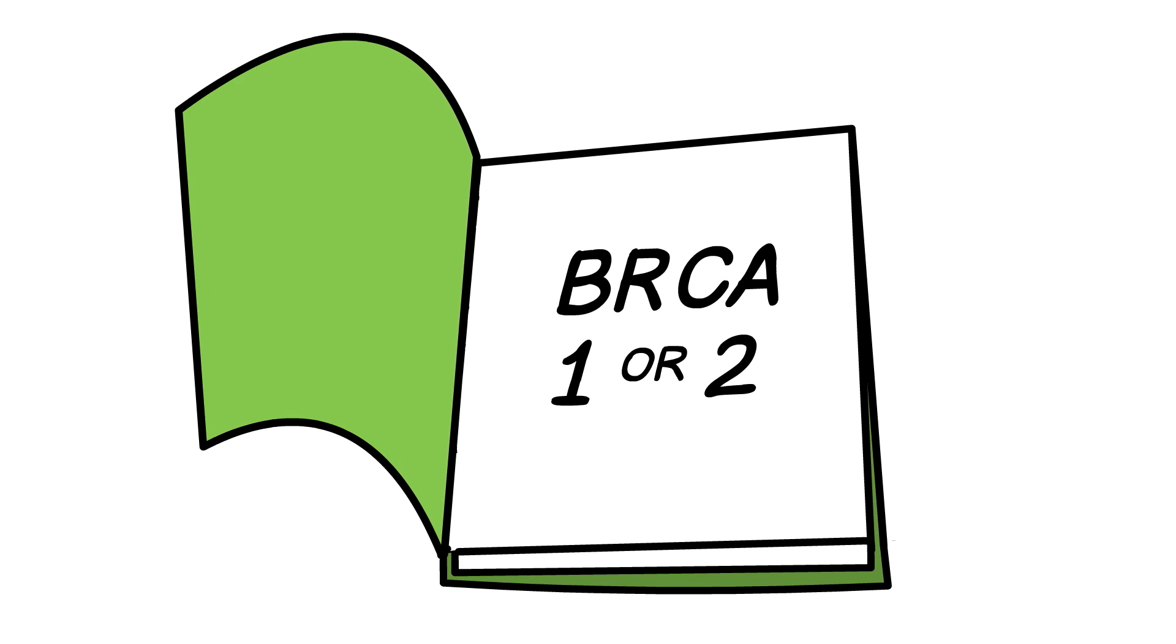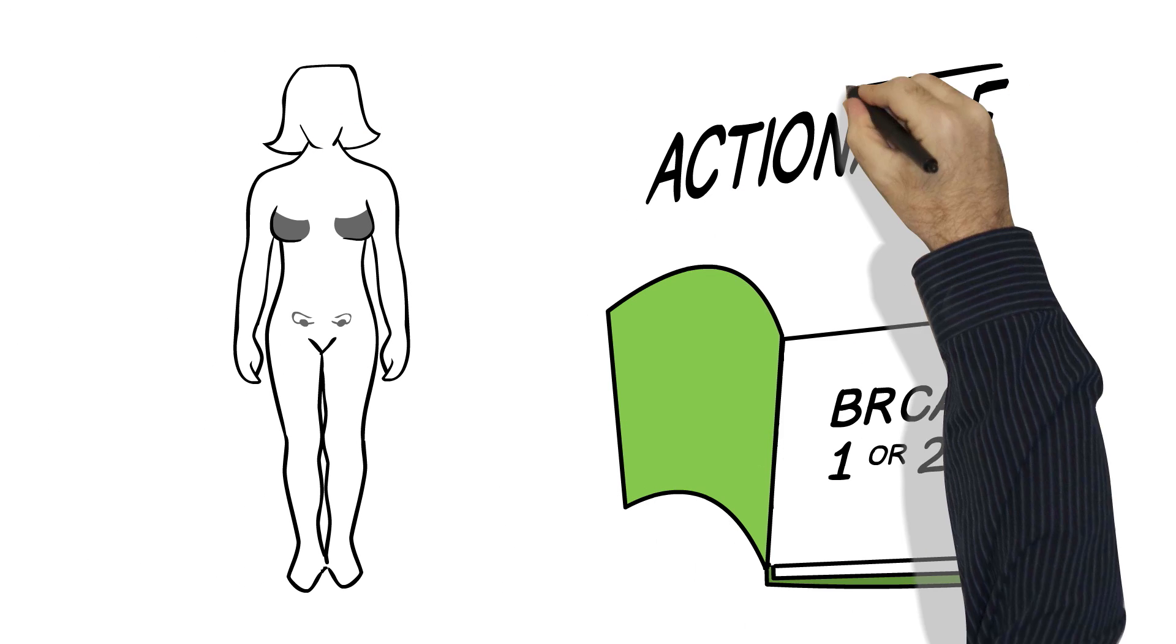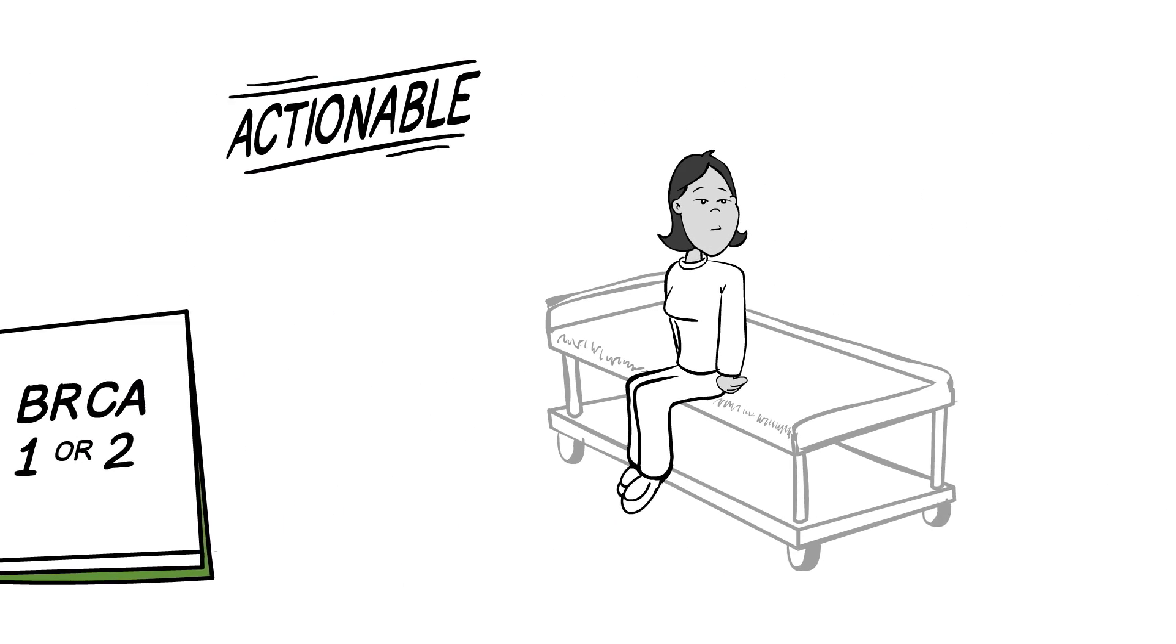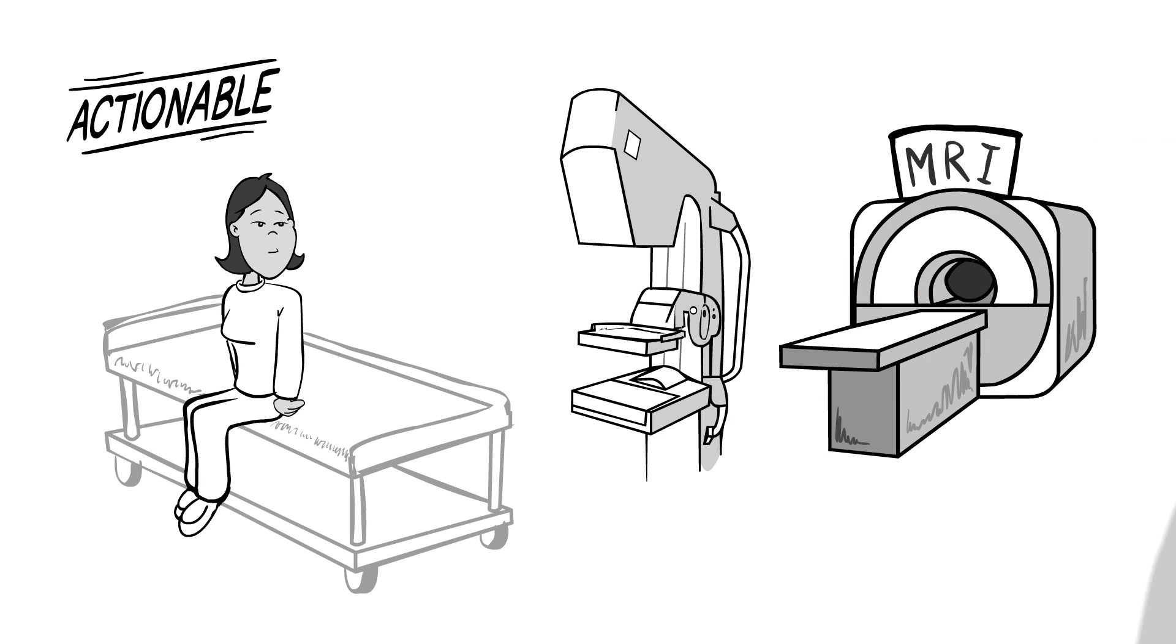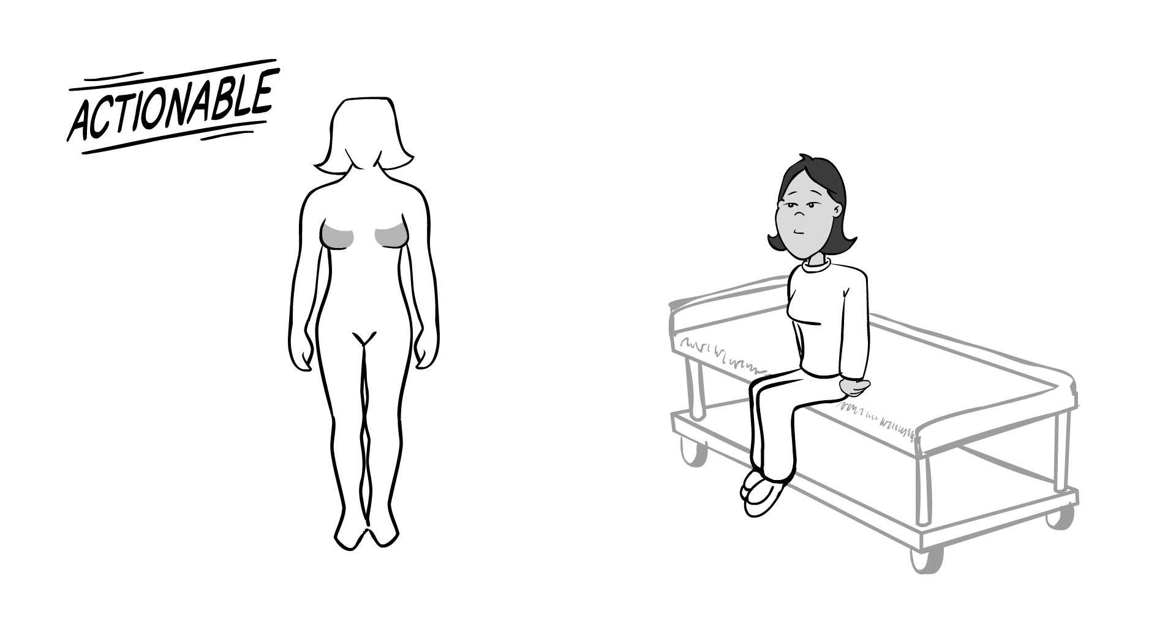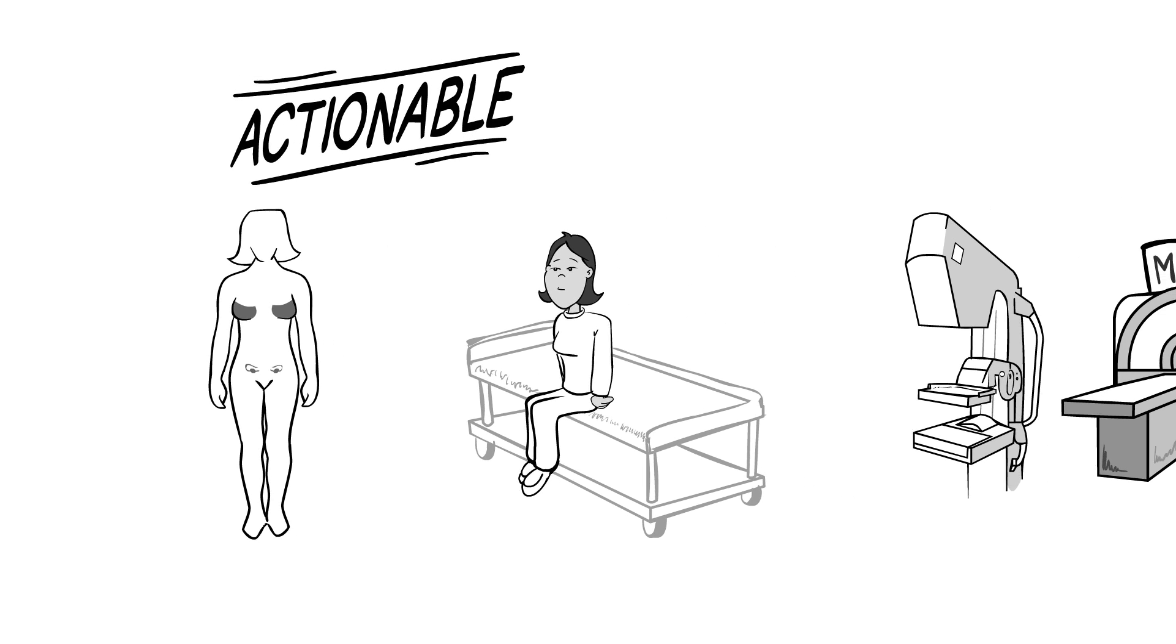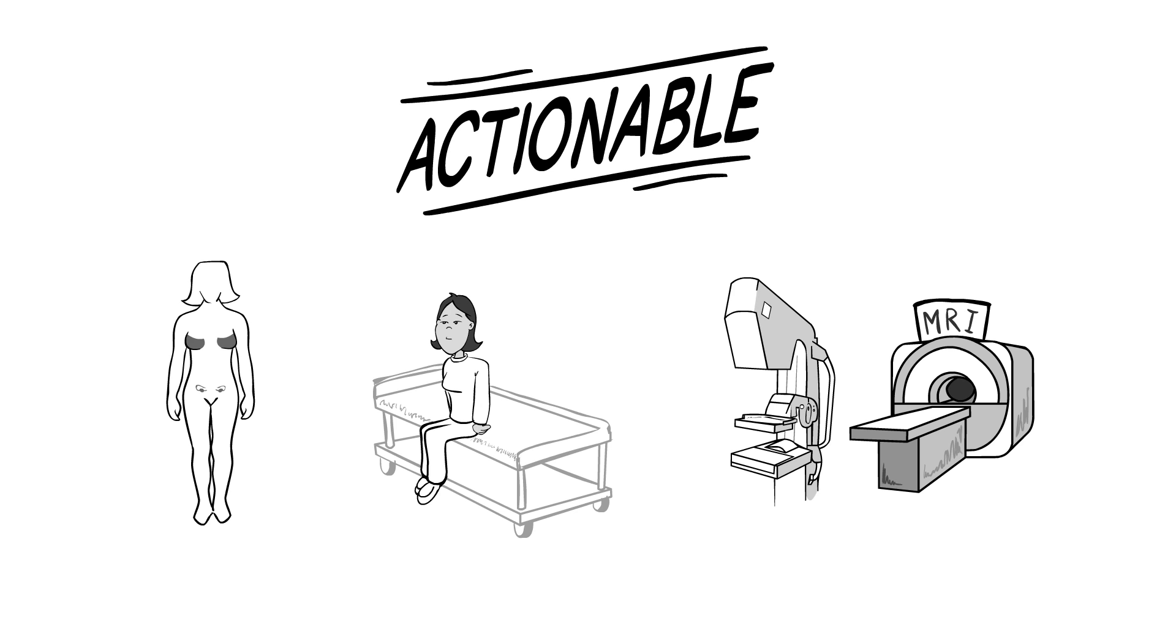This BRCA1 or 2 mutation is an example of an actionable incidental finding because we have a preventive strategy, such as increased monitoring, mammograms or MRIs, or some women may choose to have surgery to remove their breast and or ovaries. These are all proven strategies to help reduce chance of developing breast or ovarian cancer.